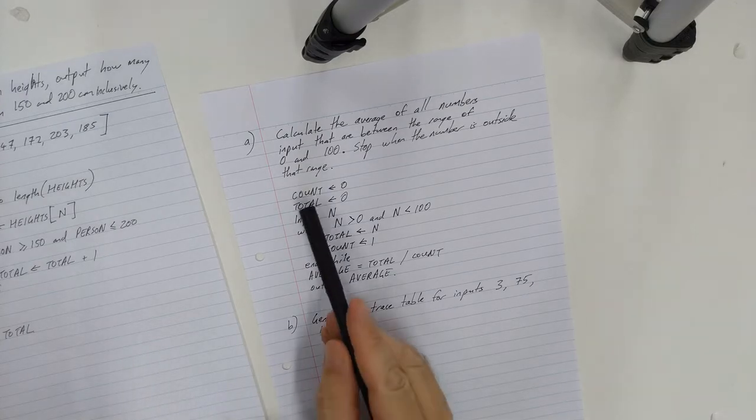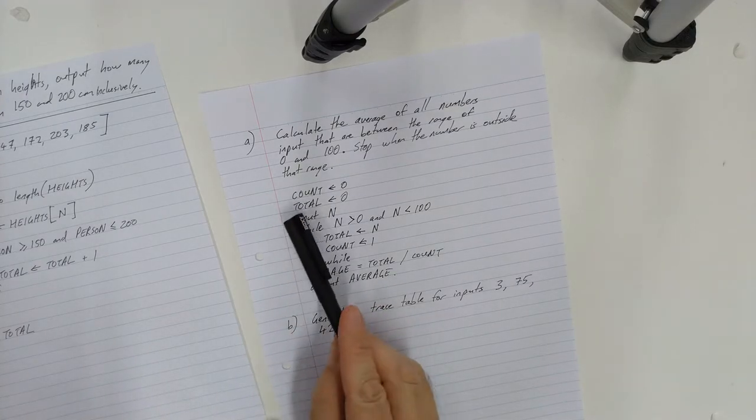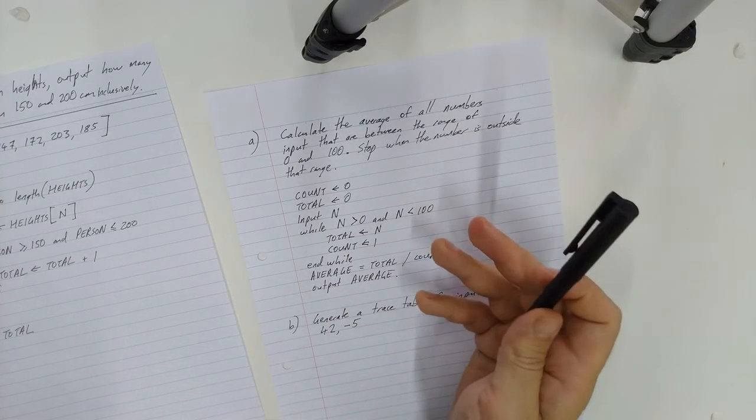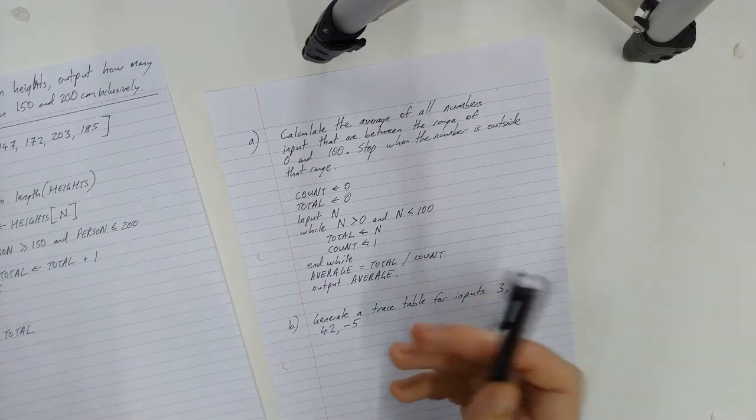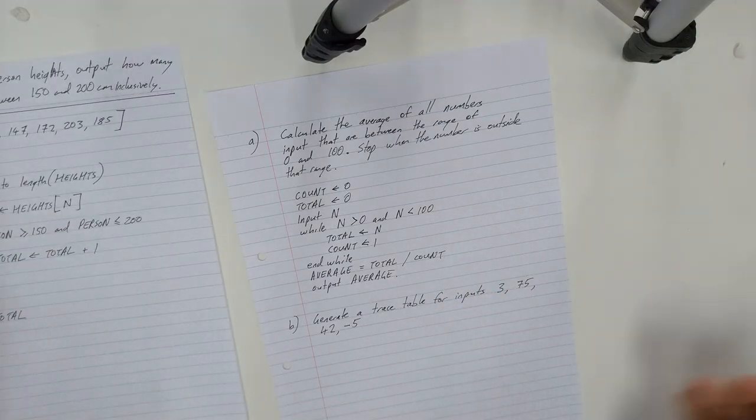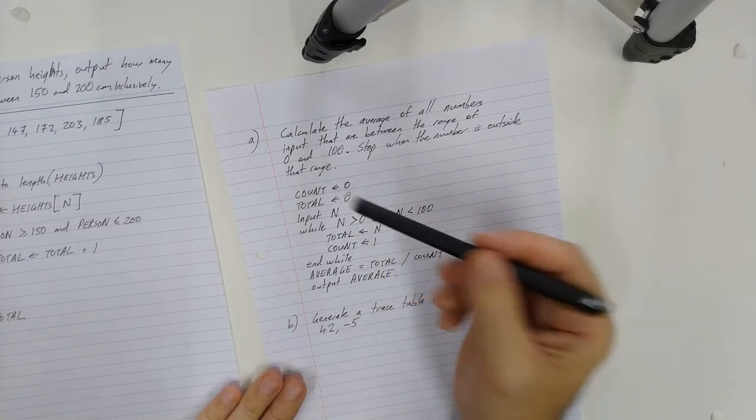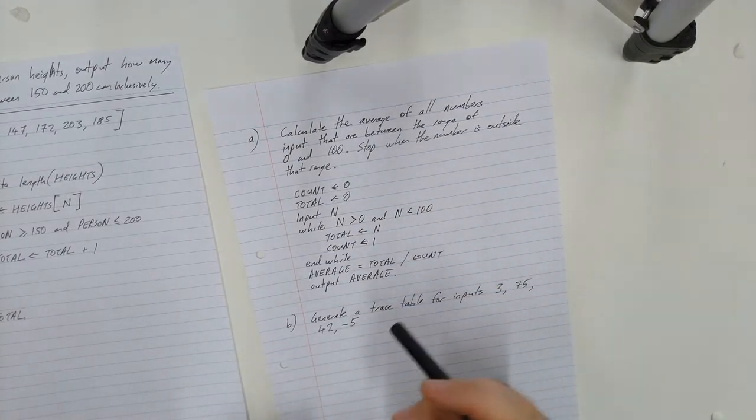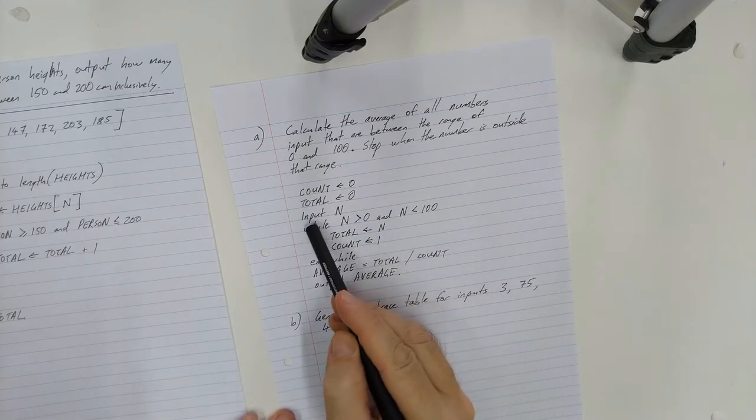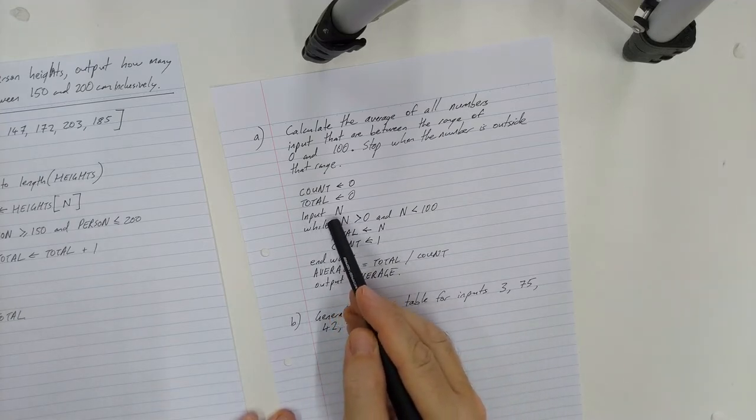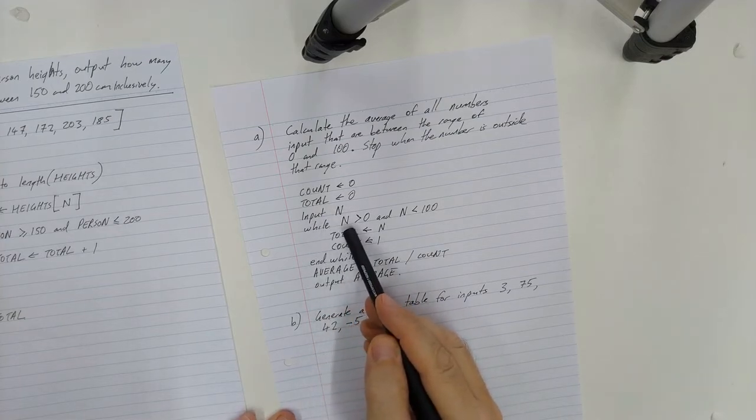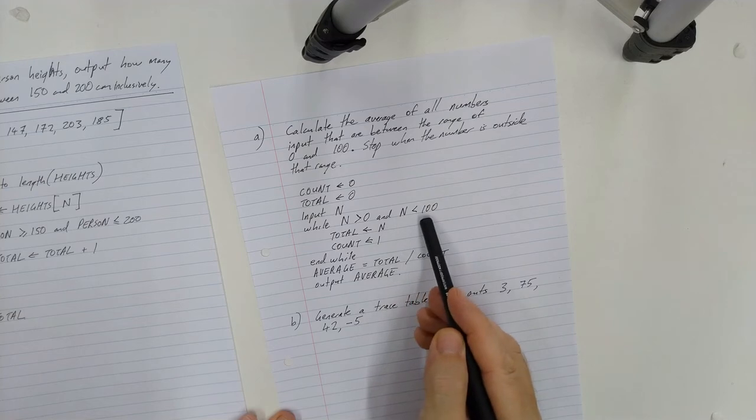So what I've done here with my pseudocode, because I know I'm going to create an average, I know that an average is calculated by taking the total of all the numbers and dividing them by however many numbers there are. So I've created a count variable and a total variable to keep track of those two pieces of information. I am then inputting a number into a variable n while my n is bigger than zero and it's less than 100.